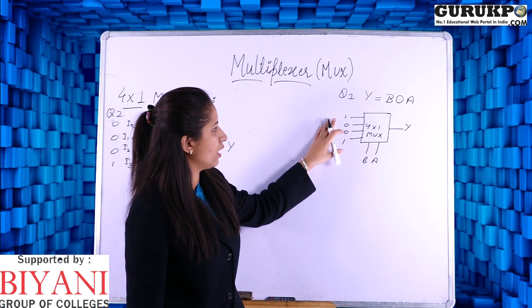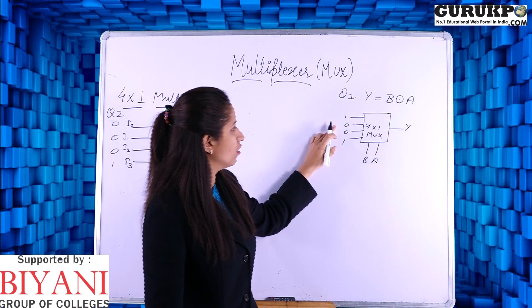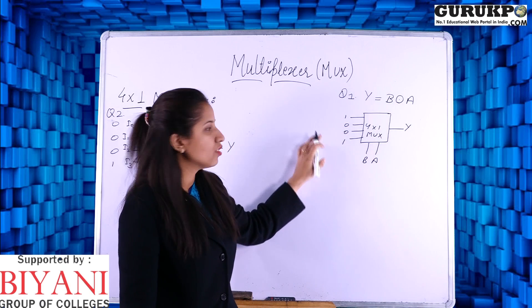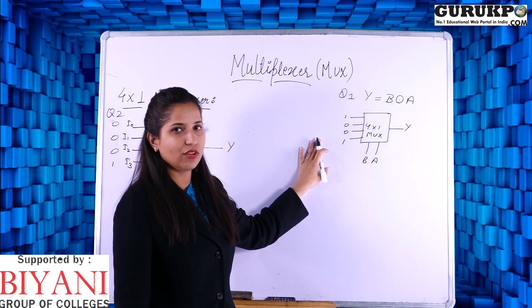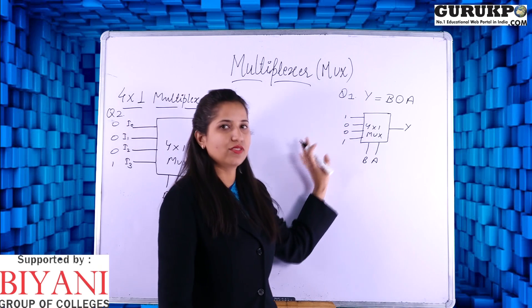Similarly, if you will get the input like 1, 0, 1 and 0, that is the output for the XOR gate. There we will get B XOR A.